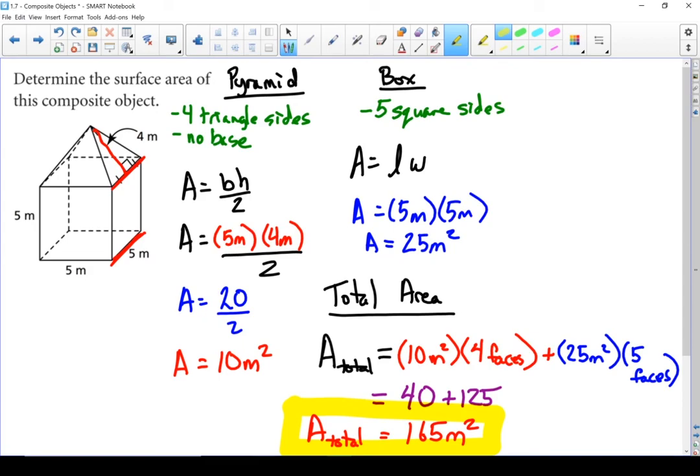So once again, take your composite object, break it down into its pieces, figure out the surface area of each piece separately and then add them all together in the end. And that's the surface area of a composite object.